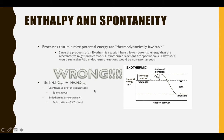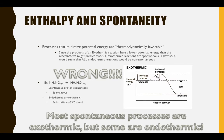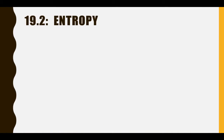This is not the case, however. Consider the dissolving of ammonium nitrate as one of many examples. This is a spontaneous process; however, it's endothermic — this reaction absorbs energy. So how is this possible? It turns out that most spontaneous processes are exothermic, but some are endothermic. This means that there must be something other than enthalpy determining whether or not a process is spontaneous. This factor is something called entropy.